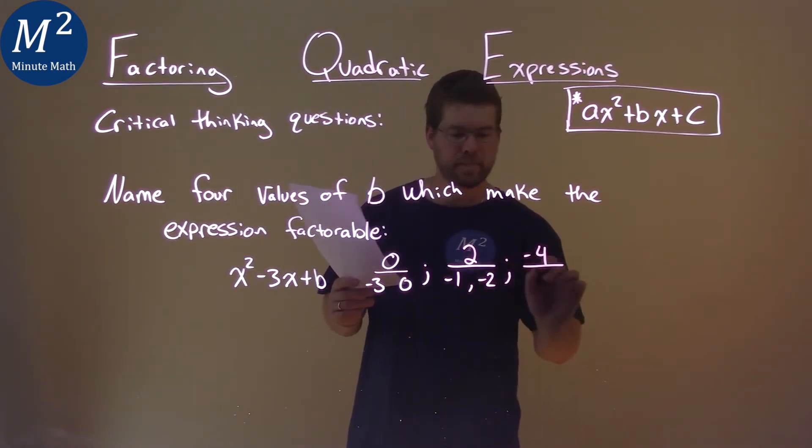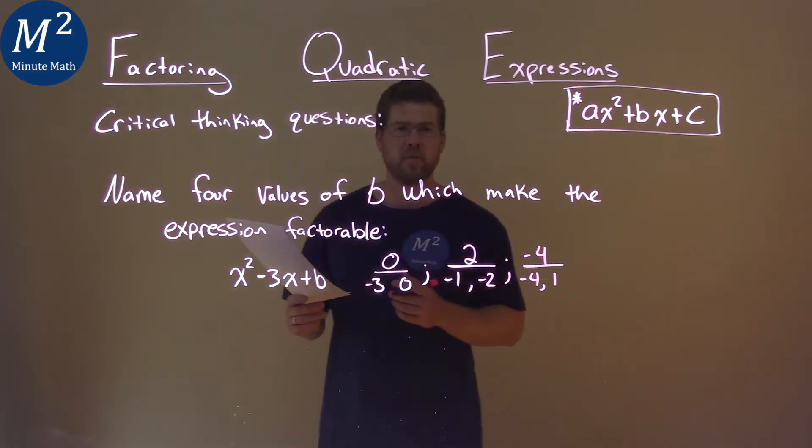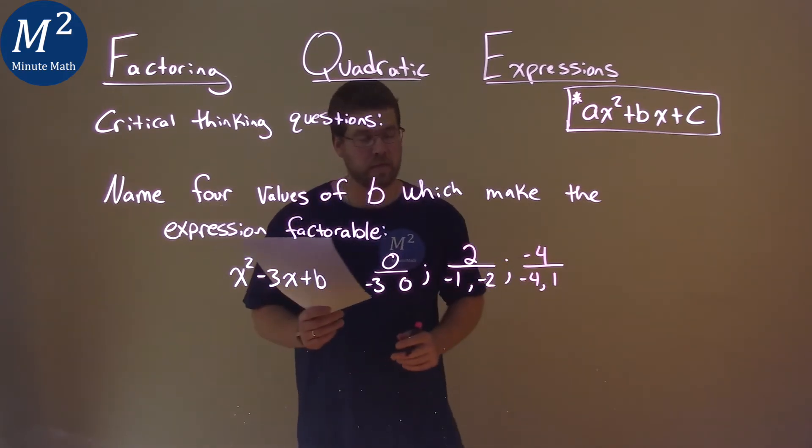Negative 4. Negative 4, well, negative 4 times positive 1 gives me negative 4. We add the two together, we get negative 3.